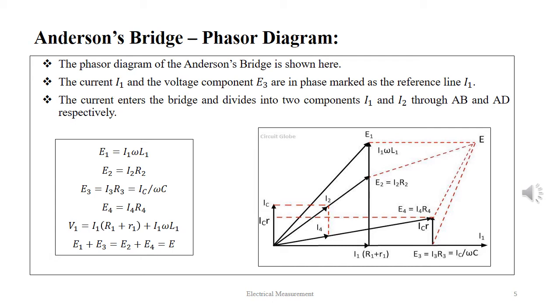The voltage drop V1 is given as I1 into capital R1 plus small r1 plus I1 omega L1. Again, the voltage drop V1 is given as E1 plus E3 or E2 plus E4.